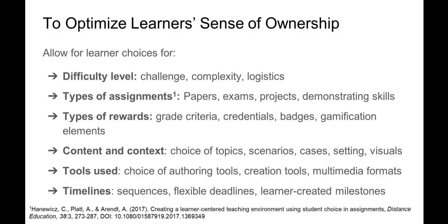You can also provide options for the types of assignments students complete. A 2017 study by Hanowitz et al. describes online instructors who designed their course to include cafeteria-style assignments. Students could pick from a large pool of different assignments with a minimum number needed to earn an A. Assignments included traditional research papers but also hands-on projects to demonstrate skill mastery. Students had positive feedback for this approach, and over 30% of students completed even more than the required number of assignments for an A.